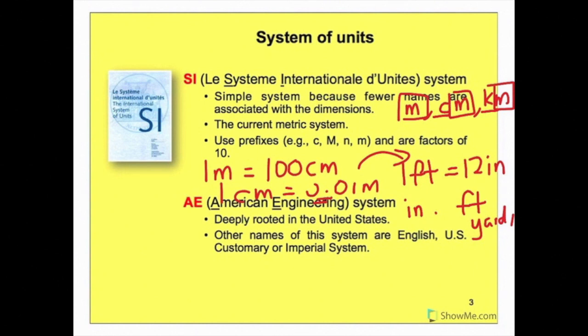The SI system also uses prefixes. For example, centi for small letter c, mega for capital letter M. This is not the dimension, this is a prefix for the unit. Small letter n for nano and small letter m for milli. And if you notice, these prefixes are factors of 10 of each other.